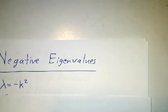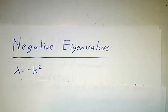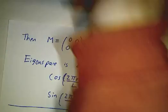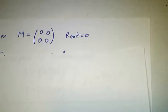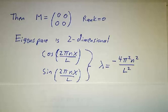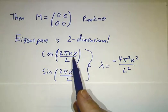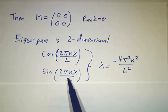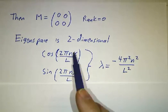Great, so k is a multiple of 2π over L, and λ is minus that squared. And when that happens, M is just the zero matrix, c₁ and c₂ can be whatever they want, and both cos and sin of kx wind up being solutions.